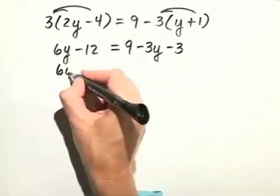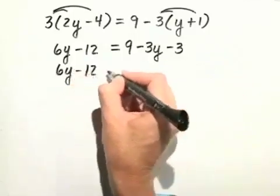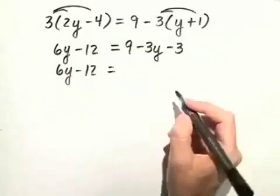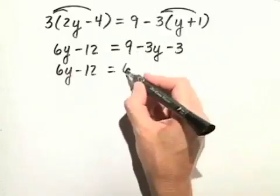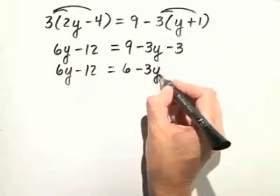So we really have 6y minus 12 on the left equals, on the right-hand side, we combine the 9 minus 3 and get 6 minus 3y.